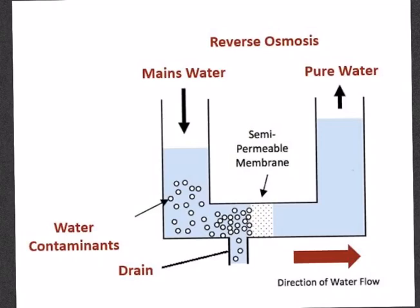In reverse osmosis, an applied pressure is used to overcome the natural osmotic pressure. It is basically a water purification process that uses a partially permeable membrane to remove ions, unwanted molecules, and larger particles from drinking water. This process can remove many types of dissolved and suspended chemical species, as well as biological ones such as bacteria, from water.